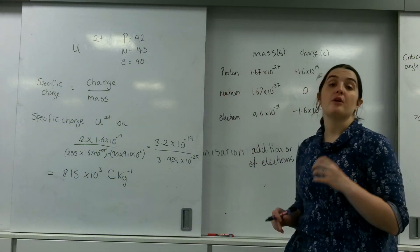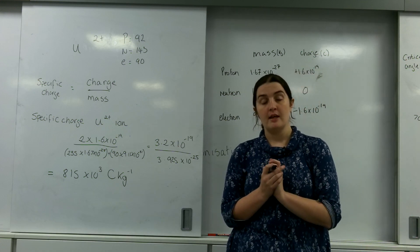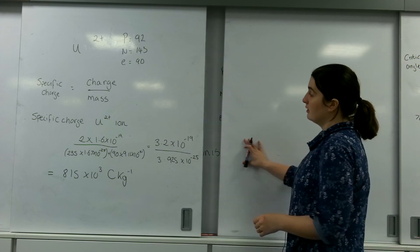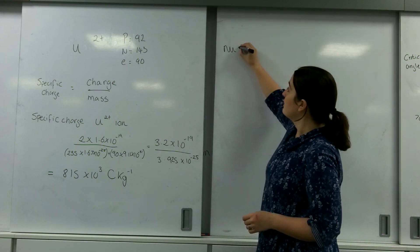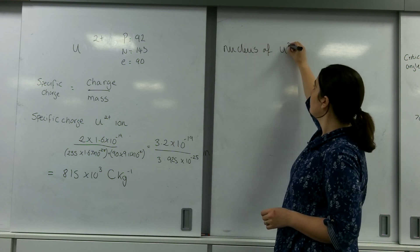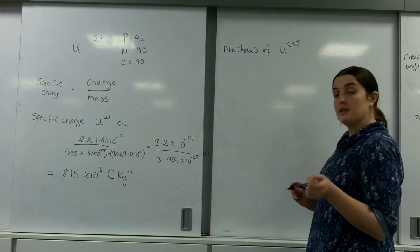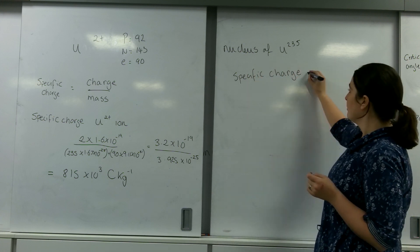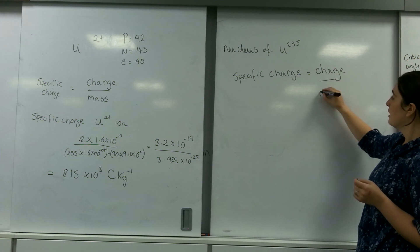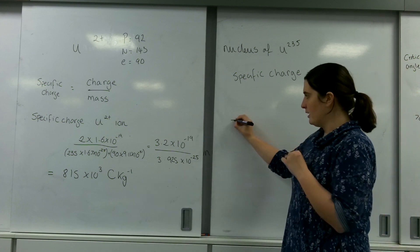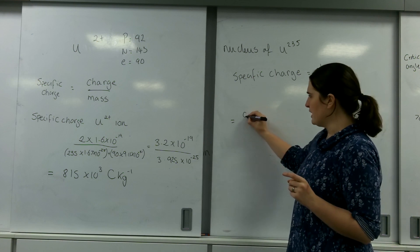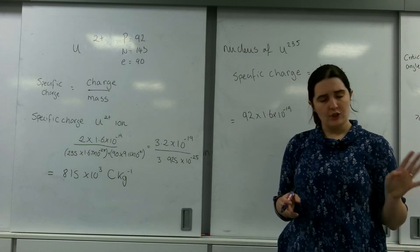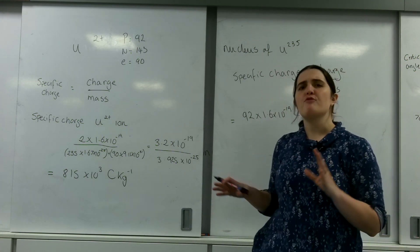But sometimes, you may be asked about the nucleus of the atom, the specific charge of the nucleus. And remember, the nucleus does not contain electrons. So, now I'm looking at the nucleus of uranium-235. And I'm finding the specific charge of this nucleus. So, that is charge divided by mass. Please be aware, this equation is not directly on your data sheet. So, the charge of my nucleus is going to be 92 times 1.6 times 10 to the minus 19, because there's 92 protons. Ignoring all the electrons, I don't care about them. I'm just looking at the nucleus. I'm imagining if I ripped all the electrons away.